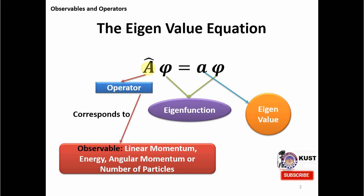For example, for linear momentum, we will have a linear momentum operator and a wave function which has information about linear momentum. When it acts on this function, it gives us the set of values — the eigenvalues — which this system or particle can have for linear momentum values. This is the eigenvalue equation, which is very basic to quantum mechanics. That is why quantum mechanics is sometimes called operator mechanics, because operators appear everywhere in the equations.